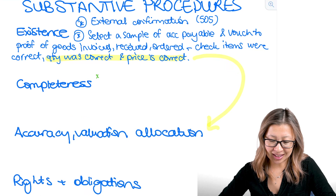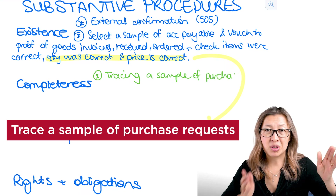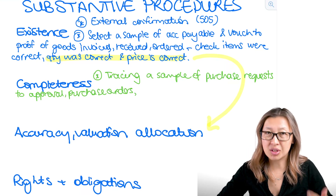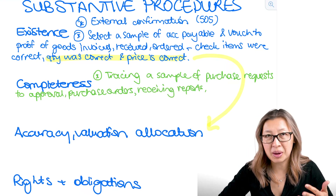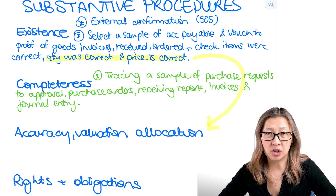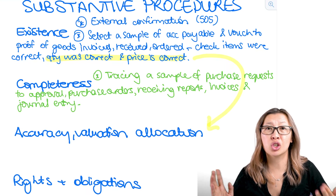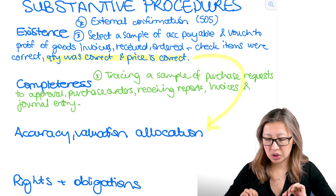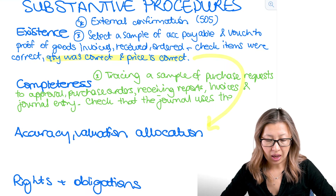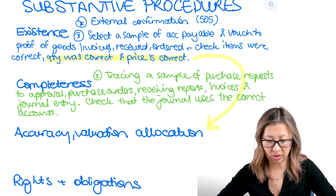When it comes to completeness, remember it's about understatement. We're going to need to trace a sample of purchase requests — start at the purchase request, move forward in time, follow it through to the purchase order, the receiving report, the invoice, the three-way match, the payment, and make sure there's the right journal entry. Completeness means everything has been recorded. We also need to make sure the journal entry uses the correct debits and credits, and we look at the chart of accounts to make sure it is correct. Completeness is one of the hardest assertions to gather evidence on because you're trying to find out if anything is missing.